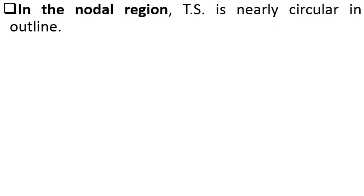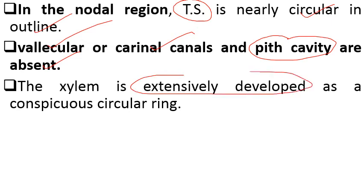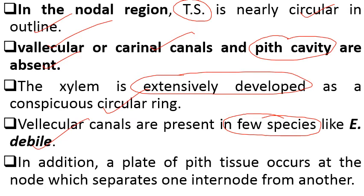The internal structure through the nodal region shows following features: the transverse section is nearly circular — the outline is not wavy as in the internodal region — and the vallecular canals, carinal canals, and pith cavity are absent. Xylem is extensively developed as a conspicuous circular ring. Vallecular canals are present in few species but absent in most. Additionally, a plate of pith tissue occurs at the node, which separates one internode from another.